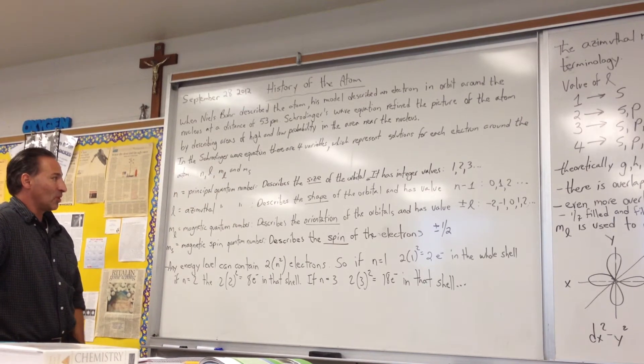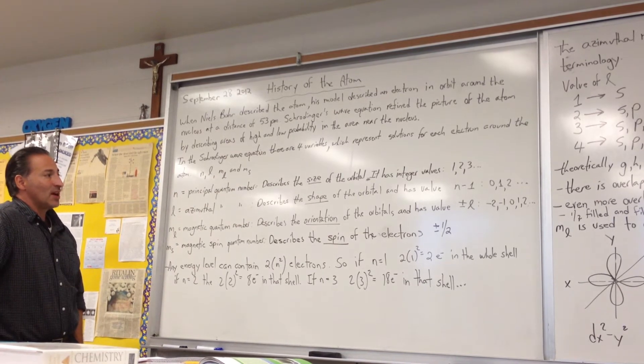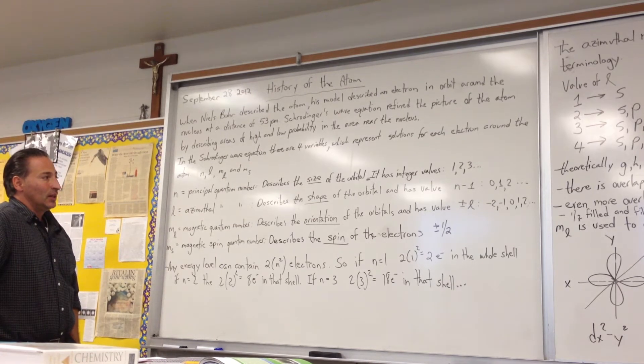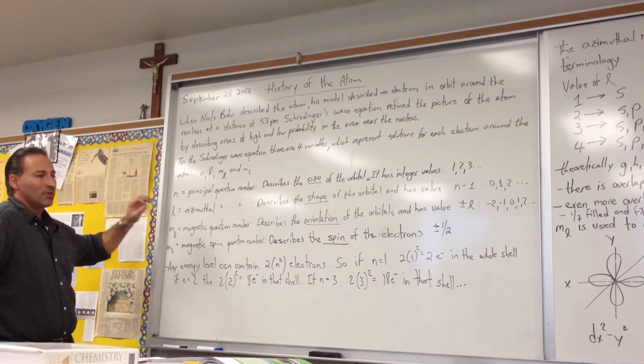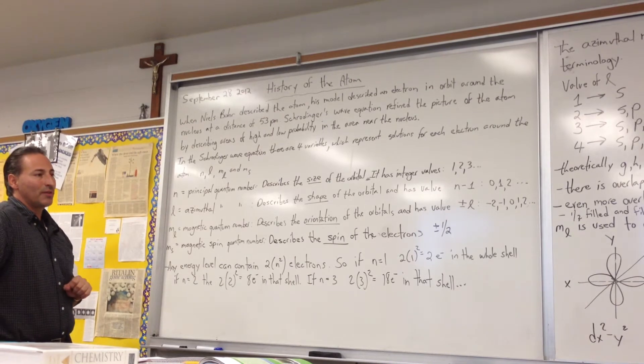N is known as the principal quantum number, and it describes the size of the orbital. And remember, these letters represent numbers that are solutions to the Schrödinger wave equation.